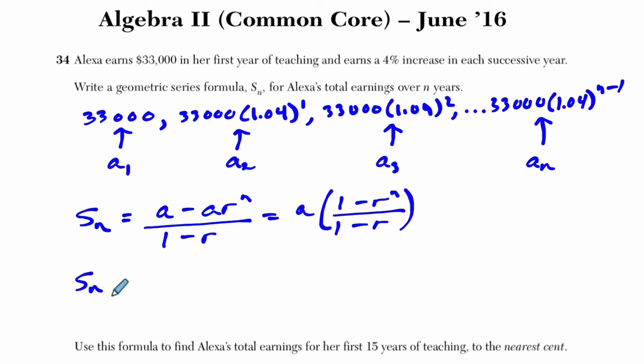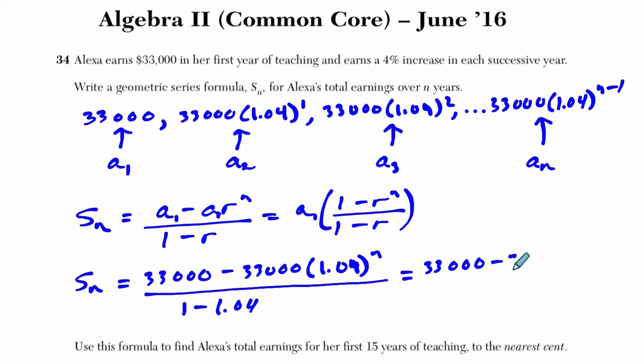In this case, what are we writing in? Well, this a is really a_1 or 33,000. So you might see a_1 there, minus 33,000 times r^n. Well, that's going to be 1.04, that's our r value, that's the rate you multiply by, to the n power, over 1 minus 1.04. I think they would have accepted this, but I'm going to go a little bit further. I'm going to say that's 33,000 minus 33,000 times 1.04^n over 1 minus 1.04, which is just negative 0.04. But I think this one will be fine.